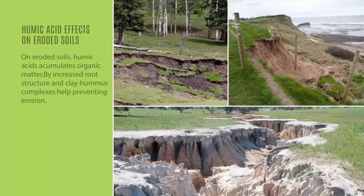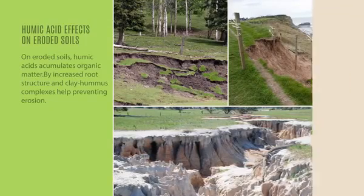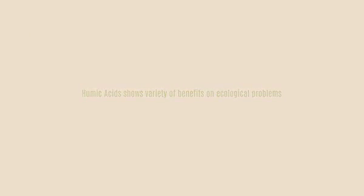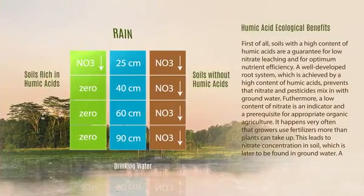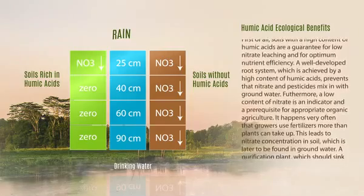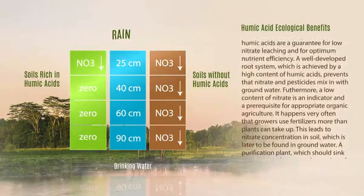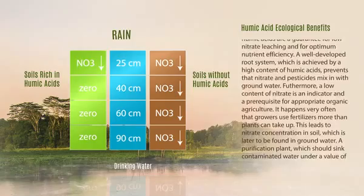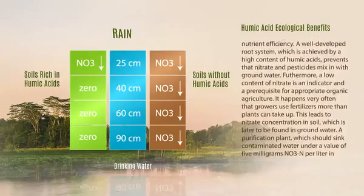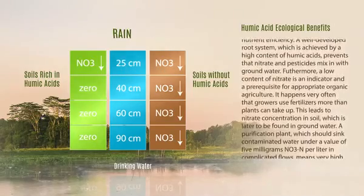Humic acids show various ecological benefits. The ecological benefits of humic acids are diverse and present profitable and effective solutions for environmental problems and the preservation of the environment. Soils with a high content of humic acids are a guarantee for low nitrate leaching and optimum nutrient efficiency. A well-developed root system, achieved by a high content of humic acids, prevents nitrate and pesticides from mixing into ground water.